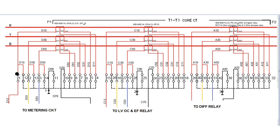Each terminal is connected to a TB (terminal block). We can select disconnecting type TBs. By connecting and disconnecting these TBs we can select the proper CT ratio. I will discuss how the connection is taken to the metering panel and protection panel in this video.